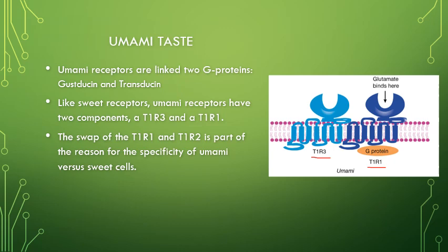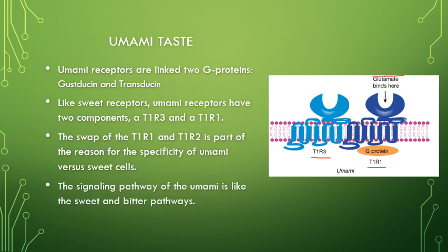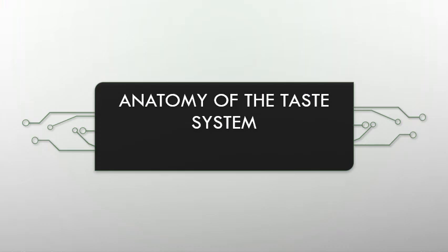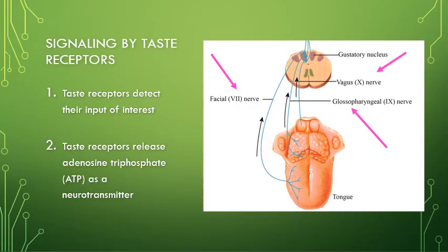For umami, monosodium glutamate breaks down into glutamate, which binds to these receptor cells — since we already have neurons that respond to the neurotransmitter glutamate. Just like the other taste pathways, this releases ATP and starts the signaling cascade. ATP is the neurotransmitter for these taste receptor cells, creating the receptor potential.